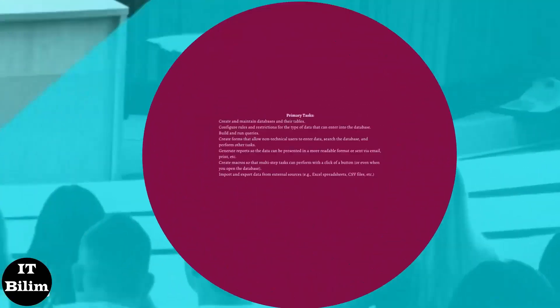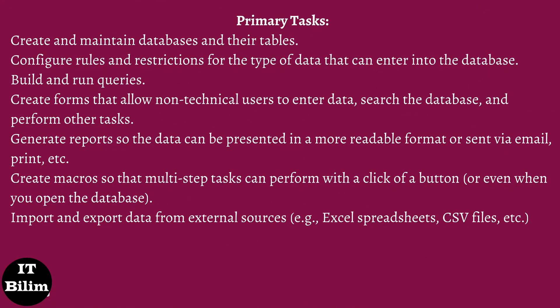Primary tasks. Microsoft Access works just like any other database. It stores related information and allows you to make connections, commonly referred to as relationships, between different things. Some of the main tasks done in Access include: create and maintain databases and their tables; configure rules and restrictions for the type of data that can enter into the database; build and run queries.